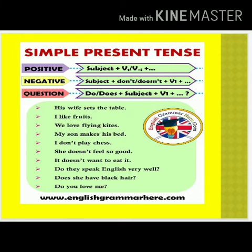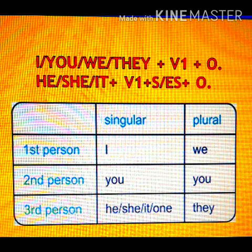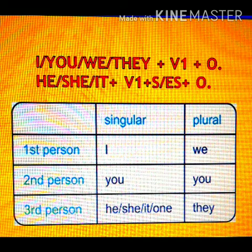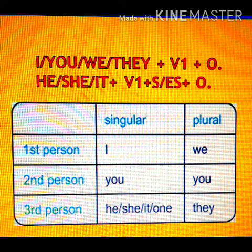We always get confused about when to use Verb1 and when to use Verb+s. It's very simple. We use Verb+s/es with third person singular — he, she, and it. But with other singular and plural persons — I, you, we, they — we use Verb1. Example: 'I like fruit.' But for third person singular, it becomes: 'He likes fruit.'